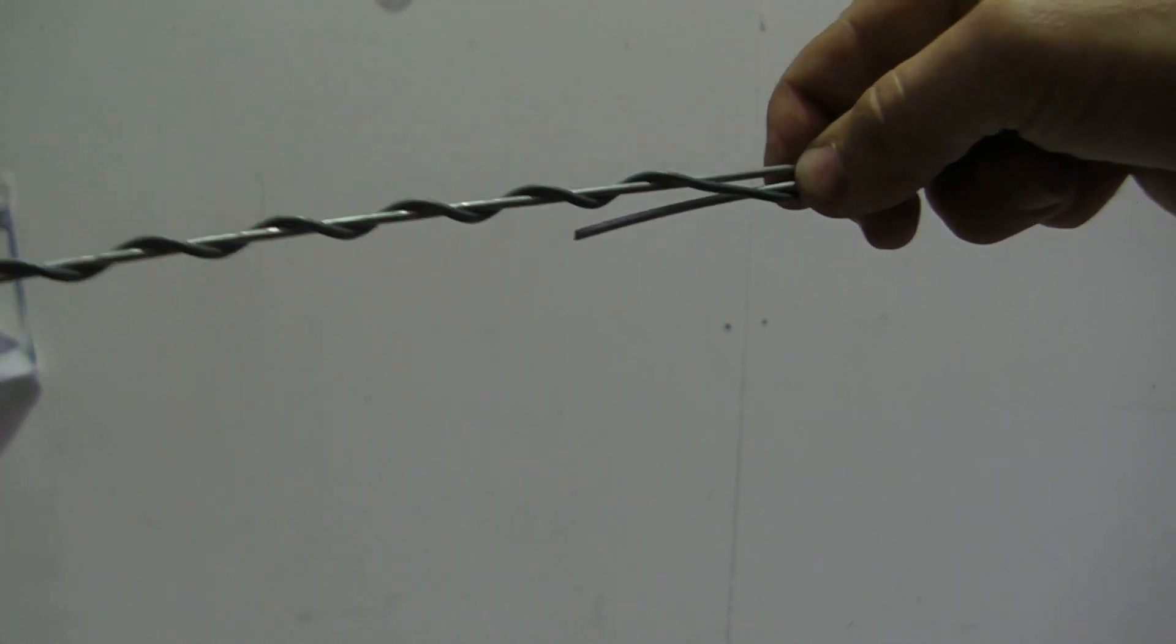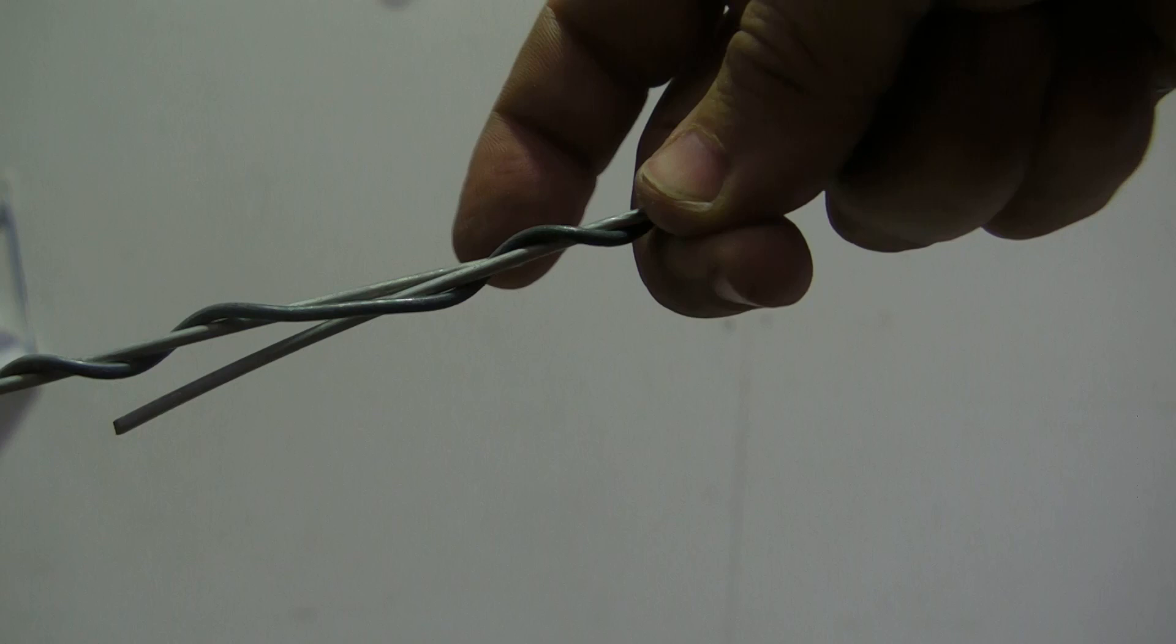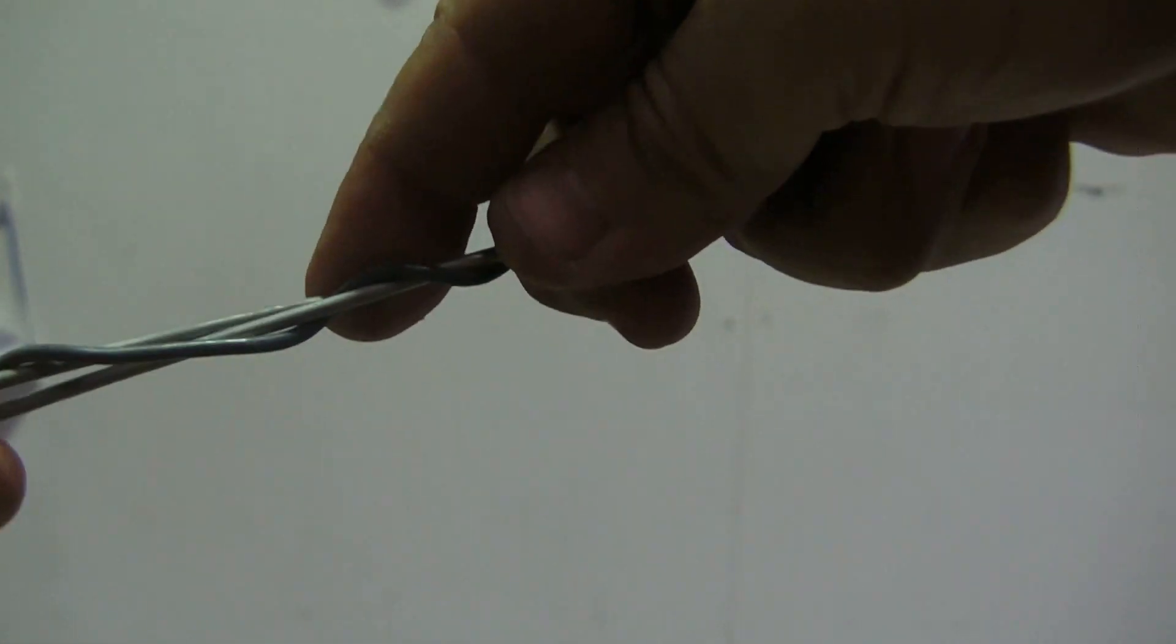It's actually physically impossible for the wires to unwind at the center, because this wire wants to wrap that way and this wire would want to unwrap that way. It's actually impossible.